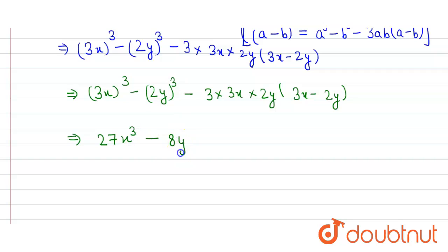Here it is 3 × 3 × 2. 3 × 3 is 9 and 9 × 2 is 18, so it will be 18xy, and then 3x minus 2y.